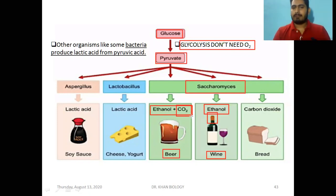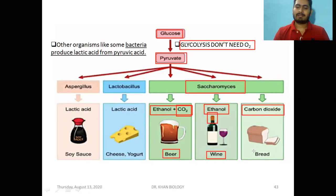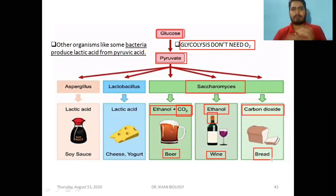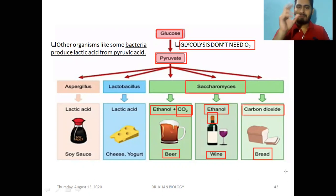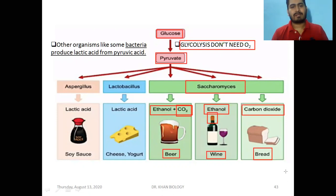Brewer's yeast is also called baker's yeast because when yeast is added to dough and mixed in, during cooking it releases carbon dioxide. This carbon dioxide gives the bread puffiness, sponginess, and pores — this is why bread is spongy and tasty.